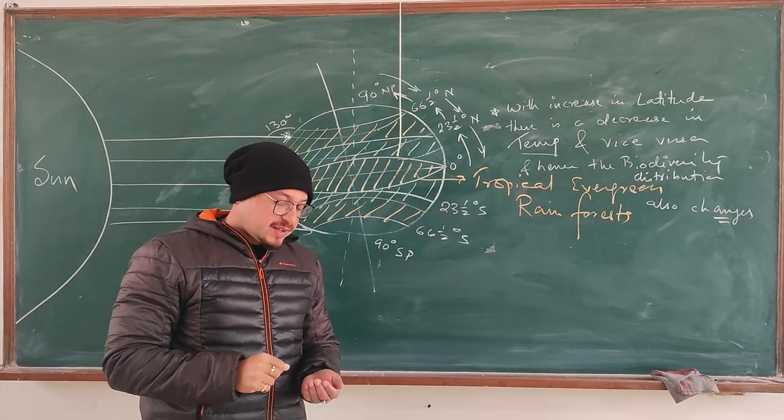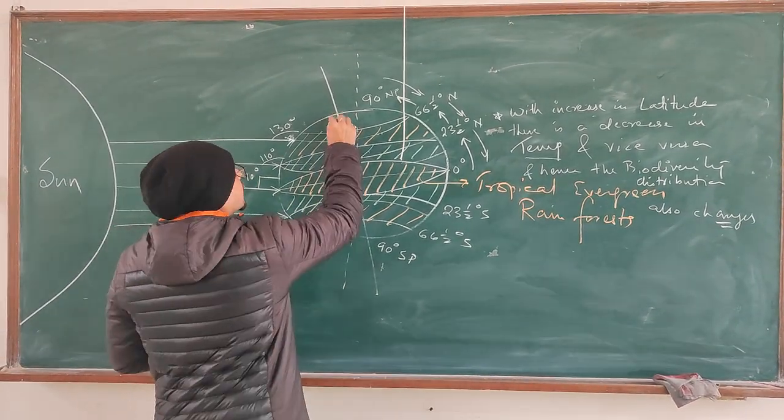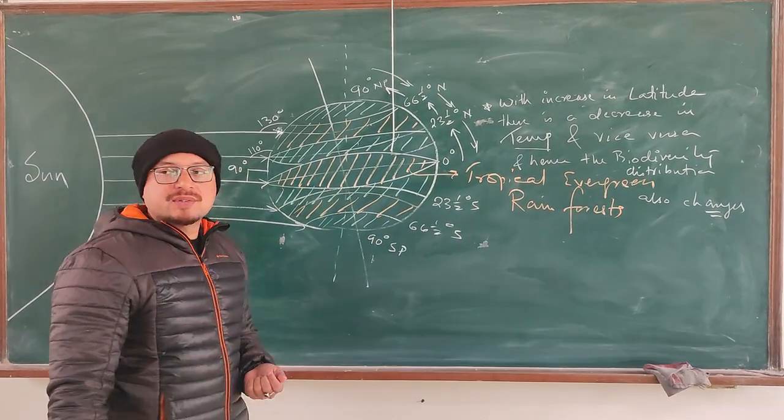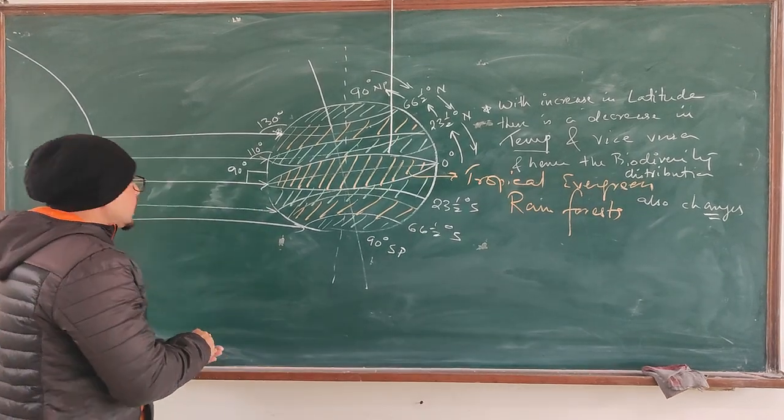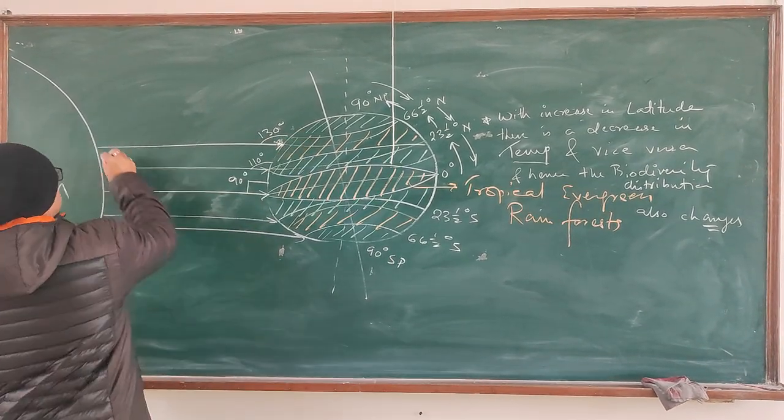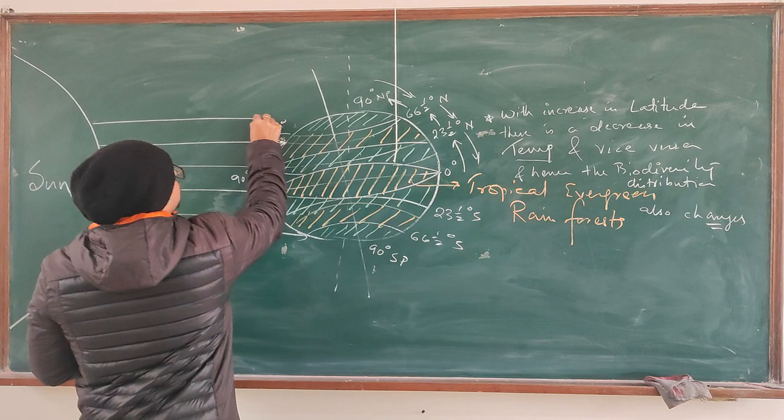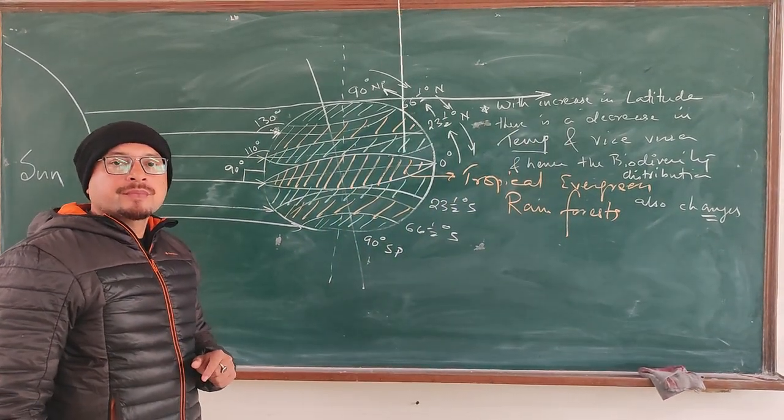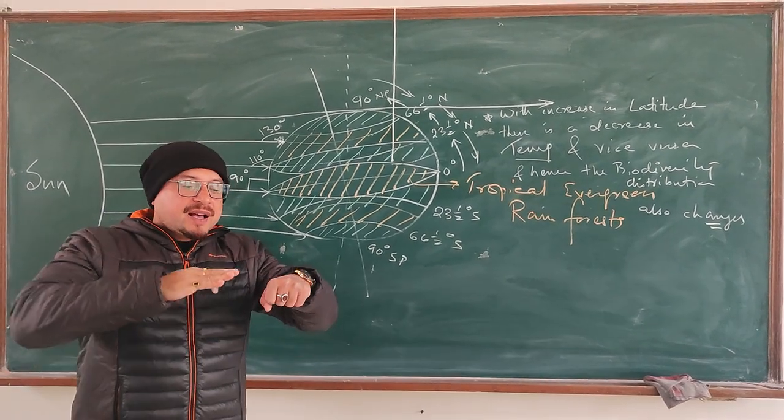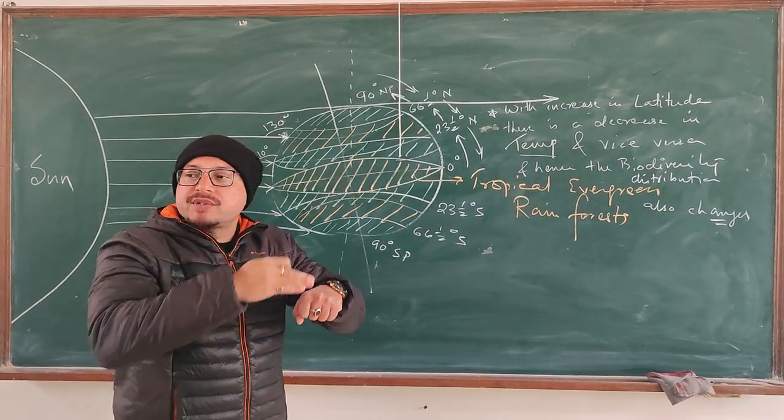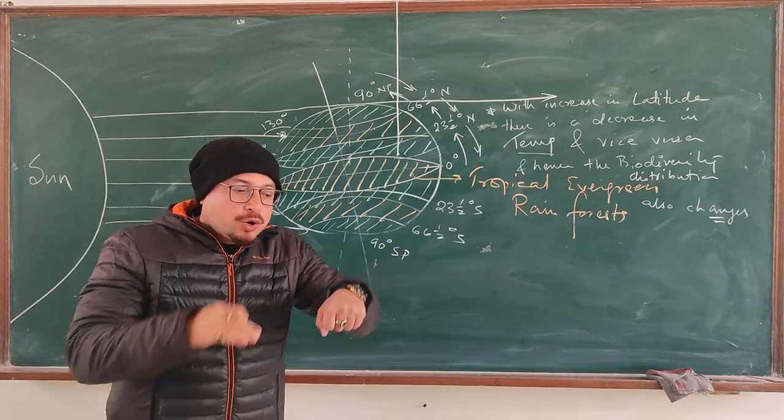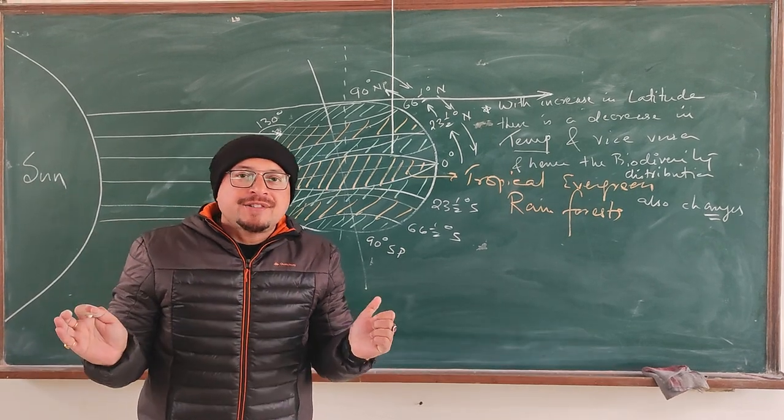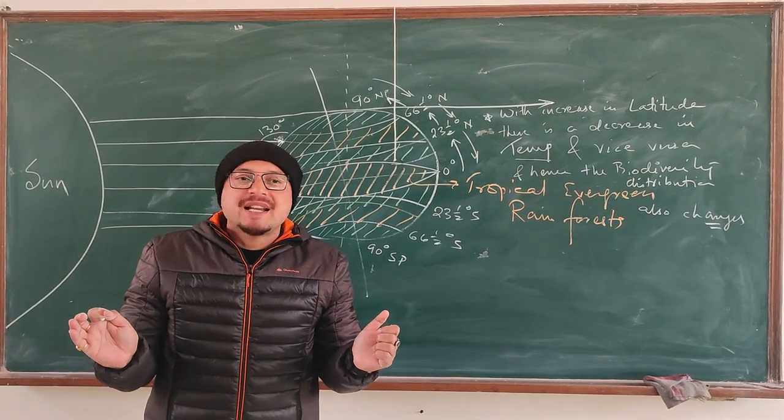Now what is left behind? This portion which is close to the poles. Now you see the sunlight in the poles, they would just pass by tangentially. So when the light is just touching the poles and passing by, not striking it, so virtually the intensity of light would be absolutely negligible.